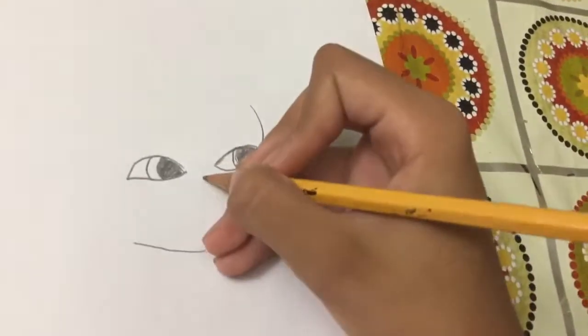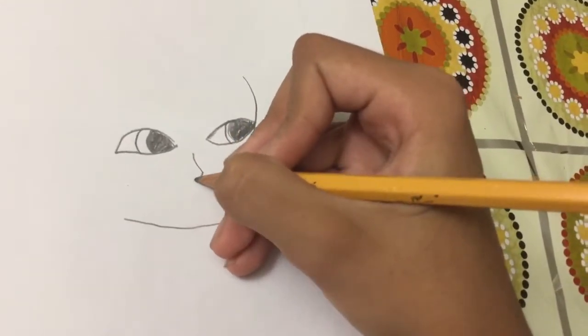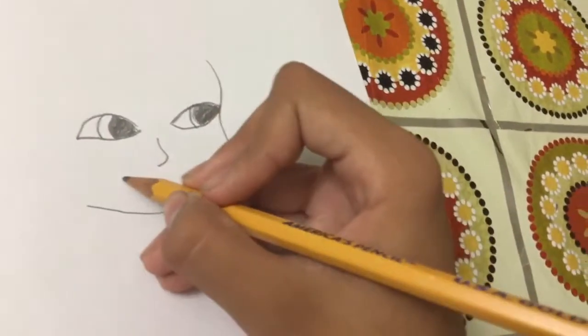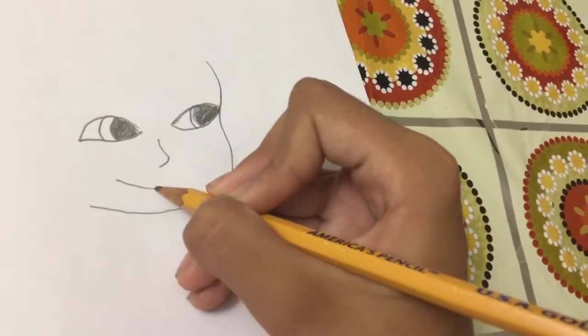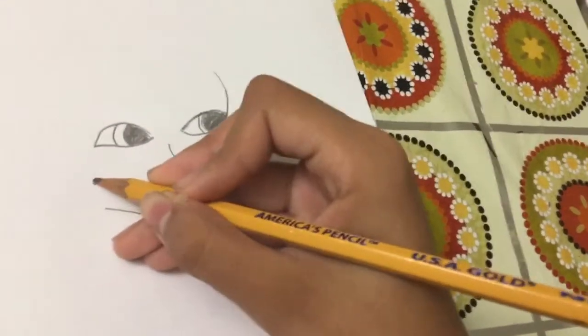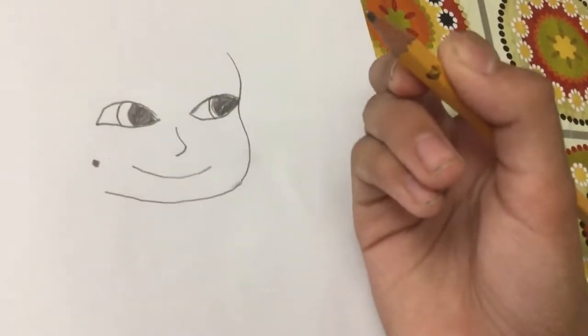Now his nose is pretty simple. So you just draw a curve, and then in, and it doesn't have a nostril or anything from the angle he is right now. So this is his mouth, and then he has like a black thing right here.